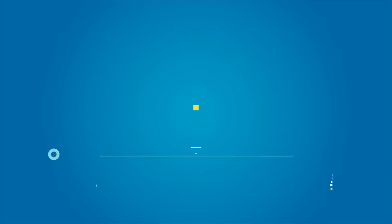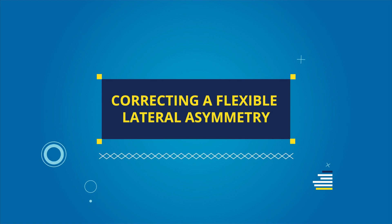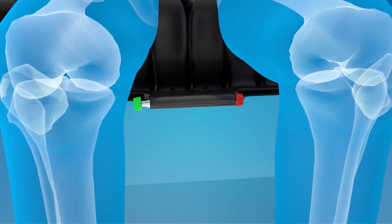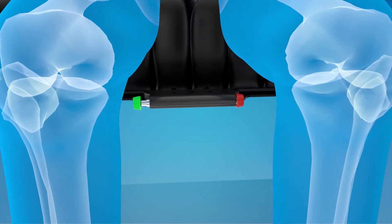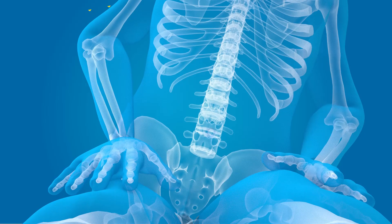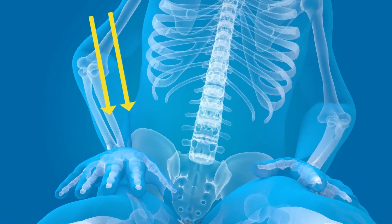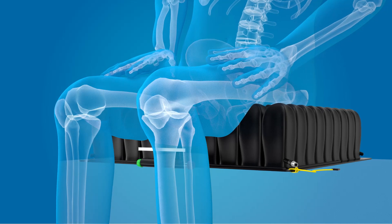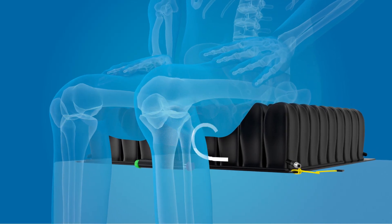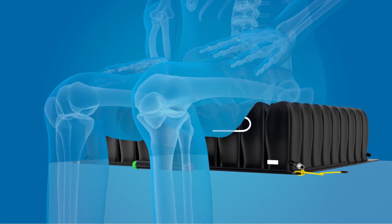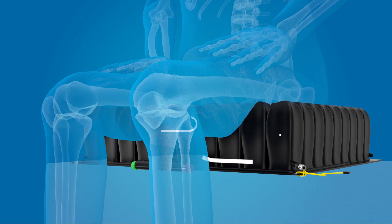To correct a flexible lateral asymmetry like a pelvic obliquity, make sure the isoflow control is open by pressing the green knob in. Press down on the higher side of the pelvis until the pelvis is level. This will force more air into the quadrant under the lower side of the pelvis and prevent it from tilting to that side.